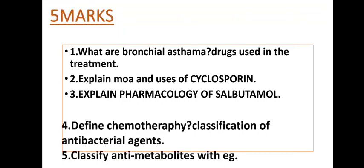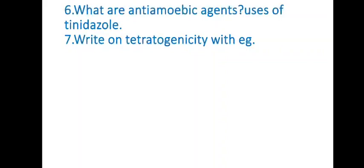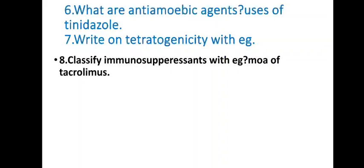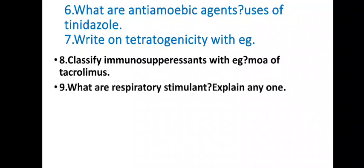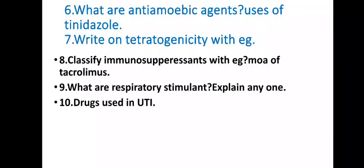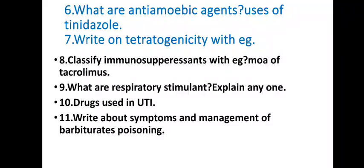Next questions: Define chemotherapy and classification of antibacterial agents. Classify anti-metabolites with examples. What are anti-amoebic agents? Uses of tinidazole. Classify anti-amoebic agents. Uses of immunosuppressants with examples and mechanism of action of tacrolimus, which inhibits calcineurin. What are respiratory stimulants? Drugs used in urinary tract infections — norfloxacin, ciprofloxacin, ofloxacin. Write about symptoms and management of barbiturate poisoning.